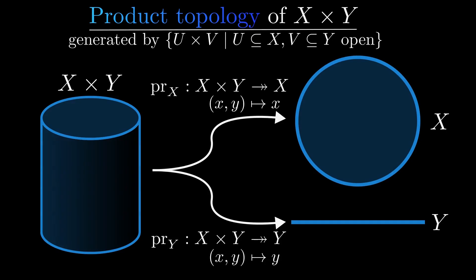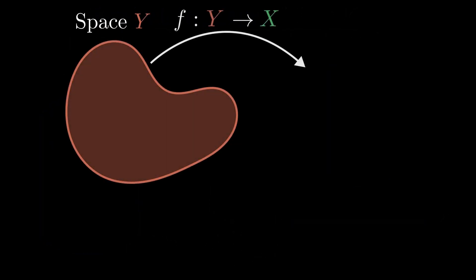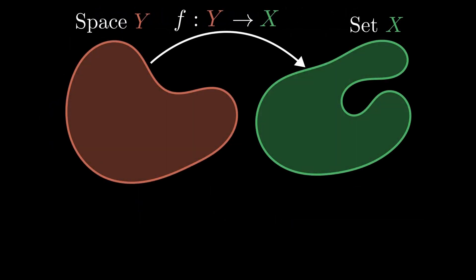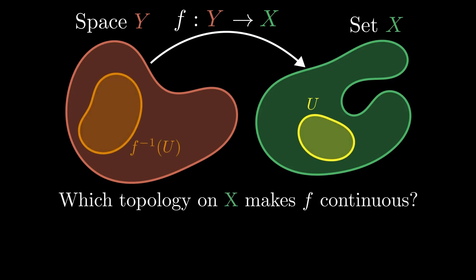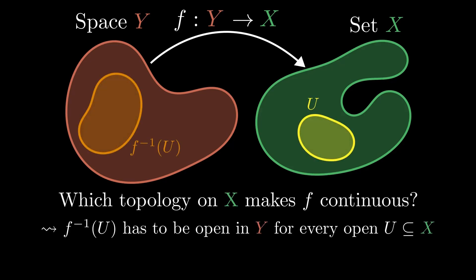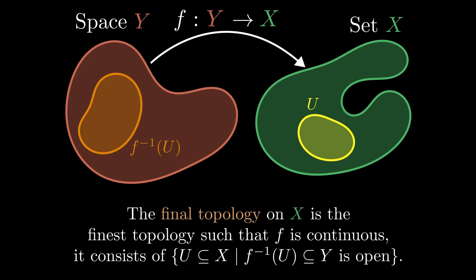The dual notion to the initial topology is the final topology. Here, the domain is a non-topological space. Once again, we want to find a topology such that f is continuous. We can, for example, take the trivial topology on x, which makes f continuous. So here we want to find the topology with the most amount of open sets, or more formally the finest topology on x which makes f continuous. This topology is called the final topology. A set is open in x if the preimage is open in y.